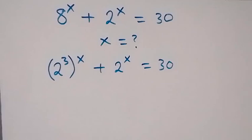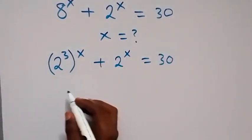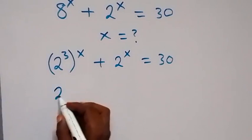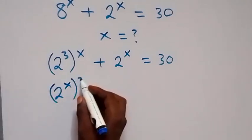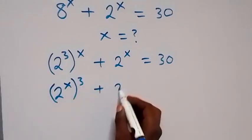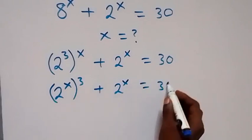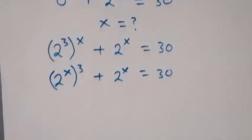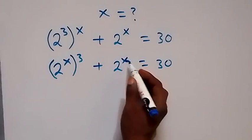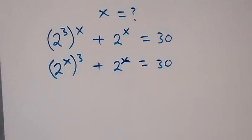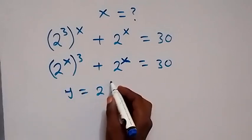From here, let's write this as 2 raised to power 3, raised to power x, plus 2 raised to power x equals to 30. We can interchange the power using the law of indices, giving 2 raised to power x, raised to power 3, plus 2 raised to power x equals to 30. We have 2 raised to power x common, so let's use a letter y to represent 2 raised to power x.